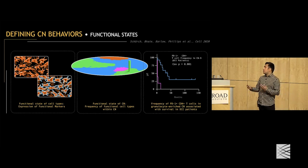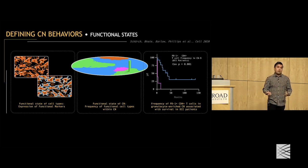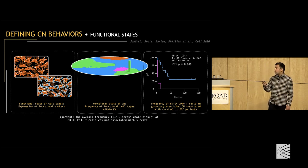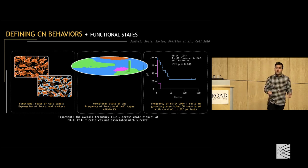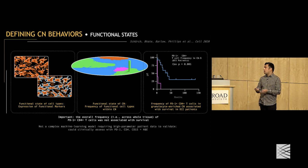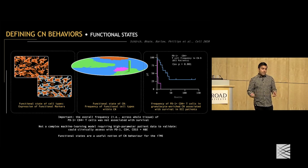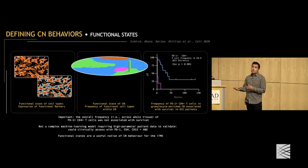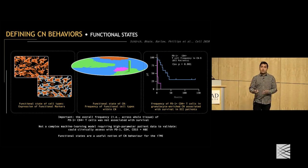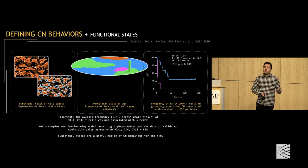The functional state of the granulocyte-enriched CN — measured by the frequency of PD1-positive CD4 T cells — was associated with survival in DII patients. Importantly, the overall frequency of these cells across the tissue was not associated with survival. This isn't a complex machine learning model; it's something that could be clinically assessed with just a few antibodies, meaning functional states of CNs are a useful notion of CN behavior for the immune tumor microenvironment.